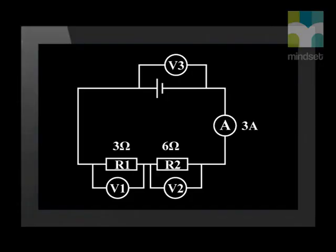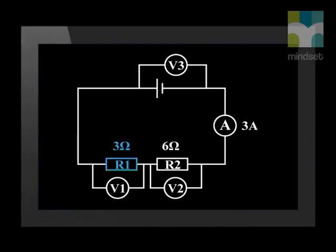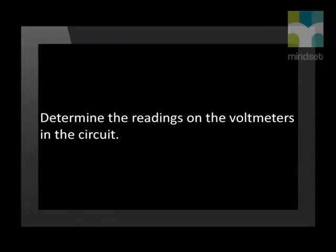Here we have a closed circuit with a cell, an ammeter, and two resistors R1 and R2 in series. There are three voltmeters that have been placed across the cell and across each resistor. We also see that the ammeter has a reading of three amperes. Resistor one has a value of three ohms while resistor two has a value of six ohms. It is always good to analyze what we are given before we attempt the question. Now we need to determine the readings on the voltmeters in the circuit.